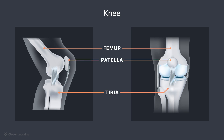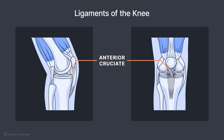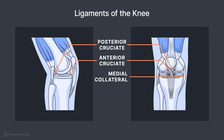Additional soft tissue structures associated with the joint include the menisci, which are pads of cartilage for shock absorption and joint stability. Important ligaments of the knee joint include the anterior cruciate, posterior cruciate, medial collateral, and lateral collateral.